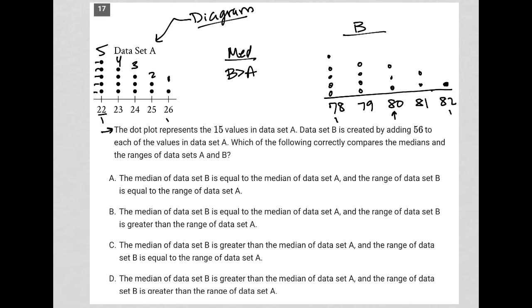And then what else do we care about? Oh, the ranges. So the range here, range is high value minus low value. So it's just 26 minus 22, which is 4. So for data set A, the range is 4. But also for data set B, 82 minus 78, the range is also 4. So in terms of range, A equals B.